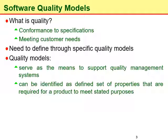So what are quality models? Software quality models are one of the best means to support the software quality management system. A quality model is mostly stated as a set of characteristics — like document clarity, design traceability, integrity, program reliability, testing integrity — and the relationships among them, that truly provide the foundation for identifying the requirements of quality and determining the quality. It can be identified as a defined set of properties required for a product to meet its stated purposes.